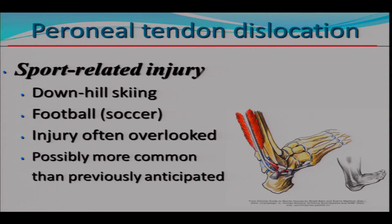On this slide we see the injury. It's almost always the peroneus brevis tendon, though it can be both tendons as well. There are ways to localize this in terms of exactly where the superior peroneal retinaculum is torn — or not really torn, but just lifted off the posterior aspect of the lateral malleolus. I'll come back to that.